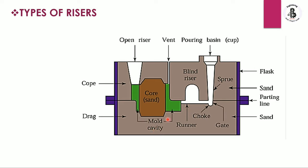The green color indicates the mold cavity or the required shape. Different components are visible: the pouring basin, where molten metal is poured and collected, then traveling through the sprue — a vertical passage connecting the pouring basin with the gating system or runner. The molten metal travels from the pouring basin through the sprue toward the mold cavity. You can also see here a blind riser, which we will discuss later regarding why blind risers are used and their importance.